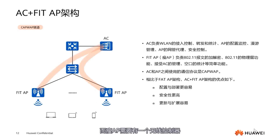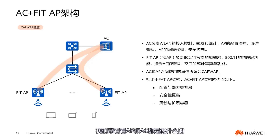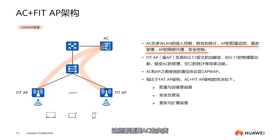Thin APs require a wireless controller, an AC, to pair with our APs. Thin APs, by default, cannot work independently. In this architecture, let's look at what APs and ACs do. AC primarily handles WLAN access control, forwarding and statistics, AP configuration monitoring, roaming management, AP network management, and security control. All these responsibilities are on the AC.